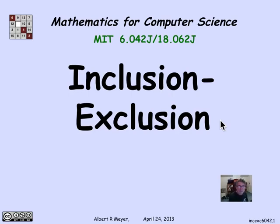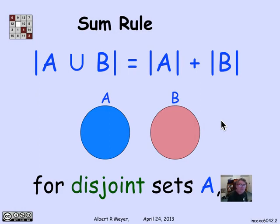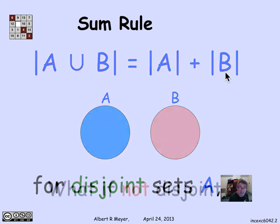The final general counting rule that we'll examine is called inclusion-exclusion. It is a straightforward generalization of the sum rule, at least in the simple case of two sets that we'll look at first. The sum rule says that if you have two sets A and B that are disjoint — no overlap between A and B — then the size of A union B is equal to the size of A plus the size of B. That's obvious; we took that as a kind of basic axiom.